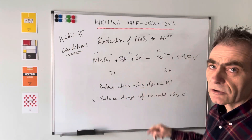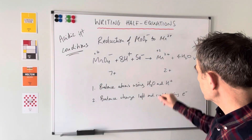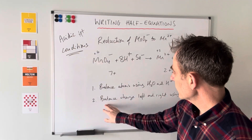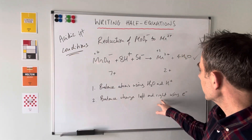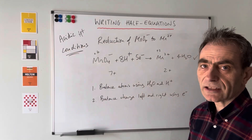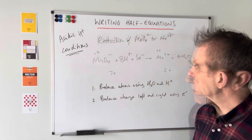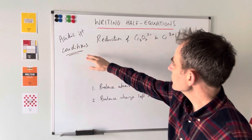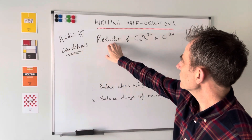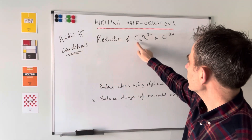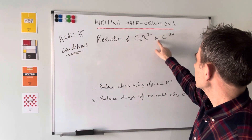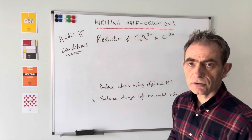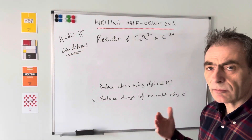So there are the two steps: step one, balance the atoms using H2O and H plus - remember we're in acidic conditions, hence the H plus ions; step two, balance the charge left and right using electrons. Now one for you to try: in acidic conditions, write the half equation for the reduction of Cr2O7 2 minus to Cr3 plus. Pause the video and play on when you're ready for the answers.